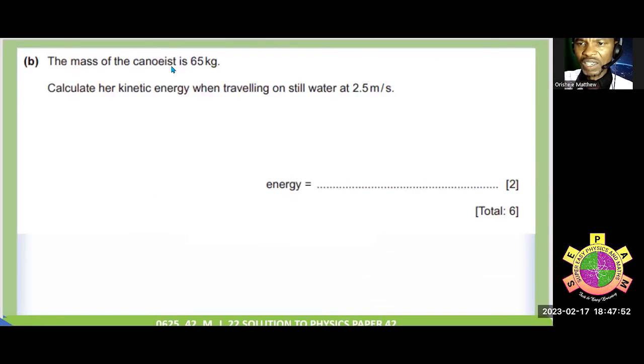With that, then the mass of the canoe is 65 kg. Calculate the kinetic velocity of the canoe. Since the water is moving the still water with the speed of 2 meters per second, velocity 2.5, kinetic energy is mass multiplied by the square of velocity divided by 2. Substitute your value. That will give me 203.125 joule.